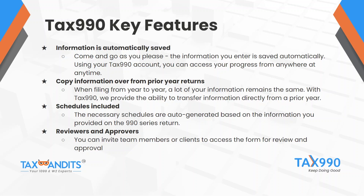When filing from year to year, a lot of the information remains the same. With Tax 990, we provide the ability to transfer information directly from a prior year. When filing consecutive years, the organization information, public charity status, books-in-care-of details, Schedule B contributor names and addresses, list of officers, and prior year revenue and expenses can all be transferred to the current year return. This is an optional feature and information can be changed once the transfer is made, keeping it completely customizable.